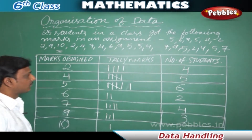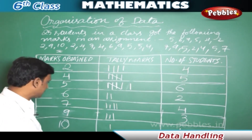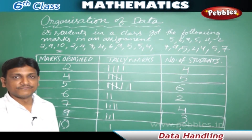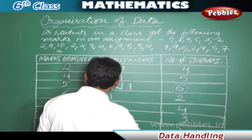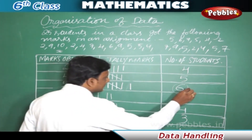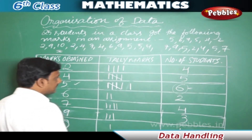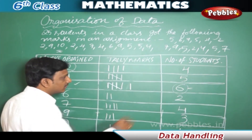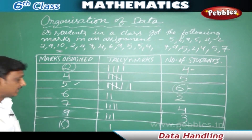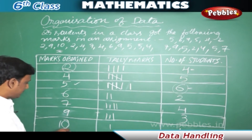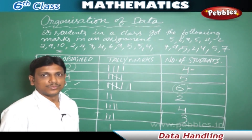In this way we organized the raw data. Now we can answer: how many students got eight marks — no one. Which mark was obtained by the maximum number of students — five marks, obtained by six students. The least mark is two, obtained by four students. The highest mark is ten, obtained by only one student.